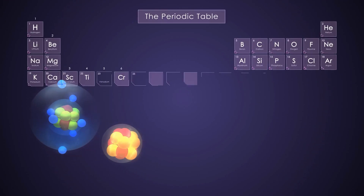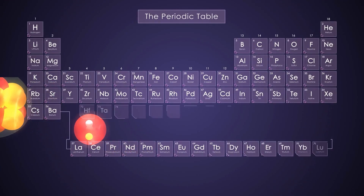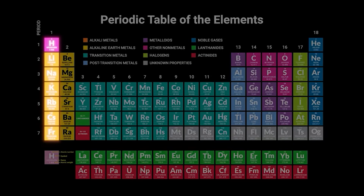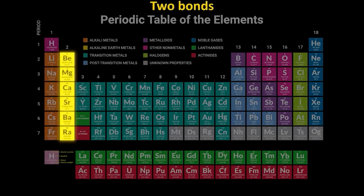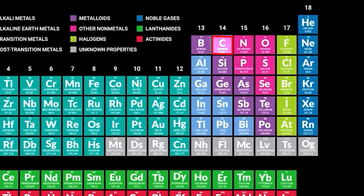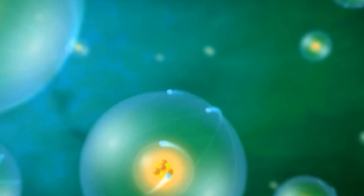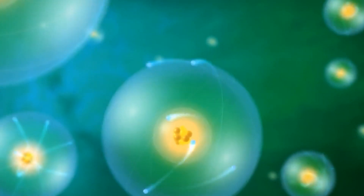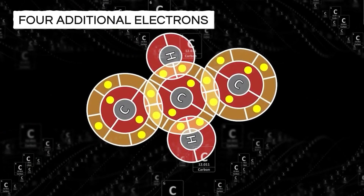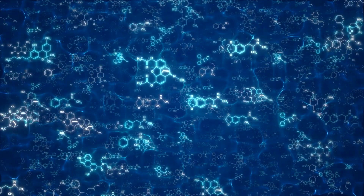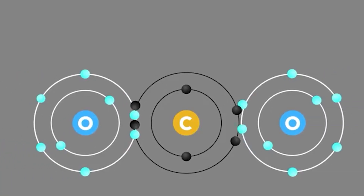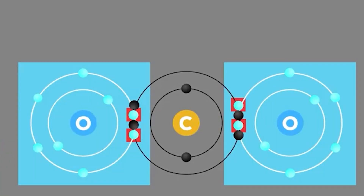The periodic table organizes elements, allowing us to determine the maximum number of bonds an element can form based on its column. Starting from the left column, each subsequent column can form one additional bond, up to the fourth column with a maximum of four bonds. Carbon resides in this fourth column, possessing a total of six electrons, with four in its outer shell. To fill its outermost shell, carbon requires four additional electrons, reaching a total of eight, akin to the stable noble gas neon. Carbon can share up to four electrons with other atoms, forming covalent bonds and enhancing its stability.